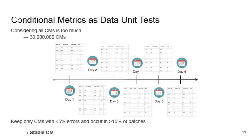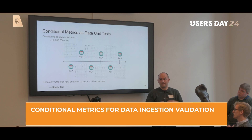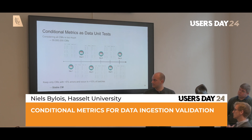However, considering all conditional metrics might be too much — in our example dataset we have 39 million possible conditional metrics. We reduce this by only keeping those that have less than five percent errors on the historical sequence and occur in at least ten percent of the batches. The ten percent threshold handles occasional trains that only drive in peak hours or special transport trains. The less-than-five-percent errors requirement ensures stability — the entity should have some expected behavior — which is why we call them stable conditional metrics.